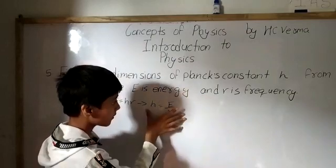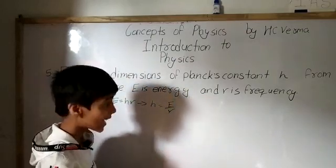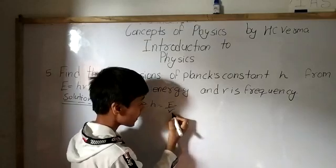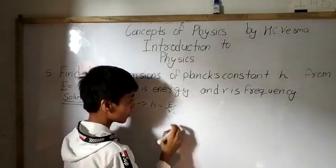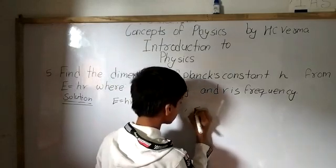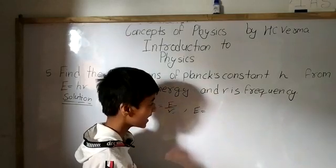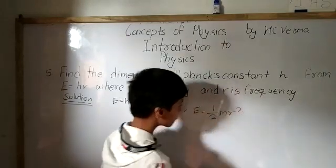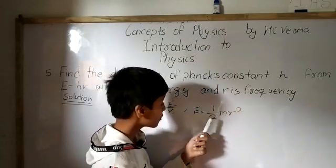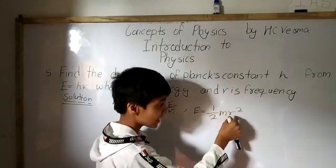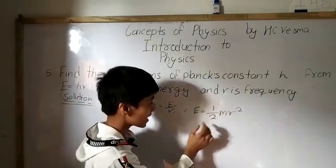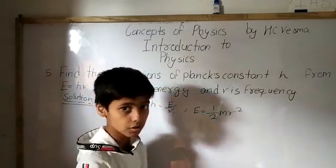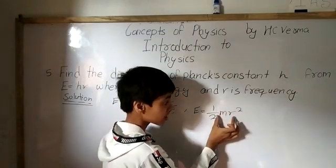Now we have the formula H equals E divided by nu. To find the dimensions of Planck's constant, we need the dimensions of energy and the dimensions of frequency, then we will divide them. For energy, we take kinetic energy: one-half M V squared. Since one-half is a pure number and dimensionless, we only need the dimensional formula of M V squared, where M is mass and V squared is velocity squared.